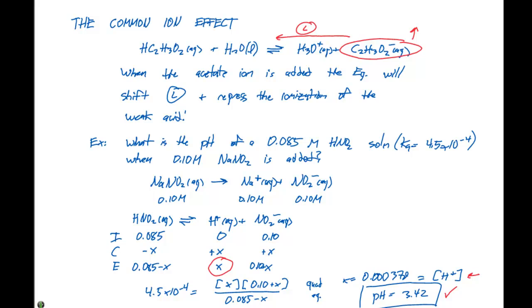We can do the same thing with weak bases—they behave the same way. For any type of equilibrium we look at, we can apply the common ion effect, which allows us to calculate pH from the equilibrium concentrations of the various species in a particular equilibrium expression.